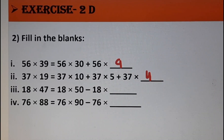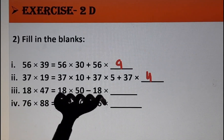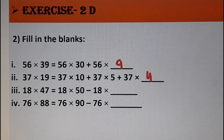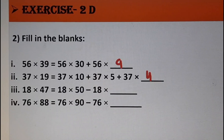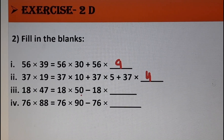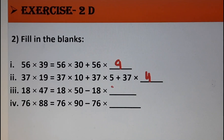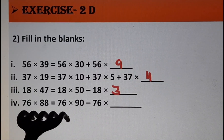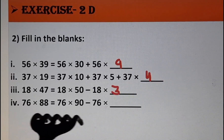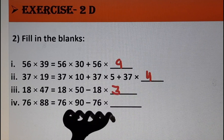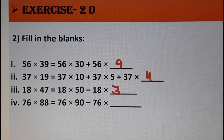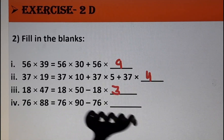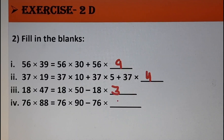Next: 18 × 47 = 18 × 50 − 18 × ___. This is the distributive property of multiplication over subtraction. Since 50 − 3 = 47, we put 3. Finally: 76 × 88 = 76 × 90 − 76 × ___. Since 90 − 2 = 88, we put 2.